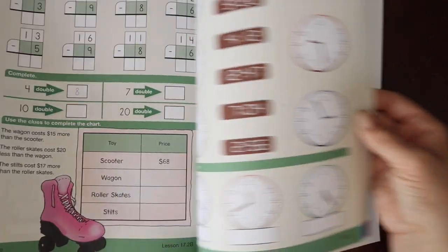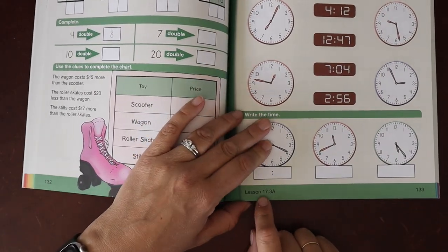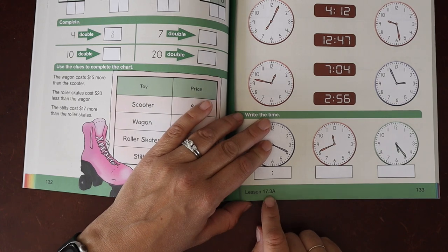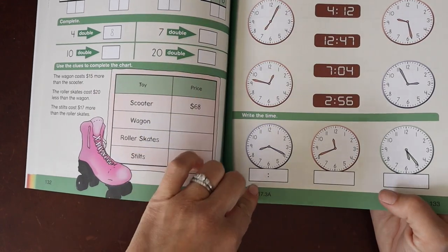So one day's lesson - the way they have the pages identified down here, we have our week number 17, we have our day number three, and then A and B would both be for day three.